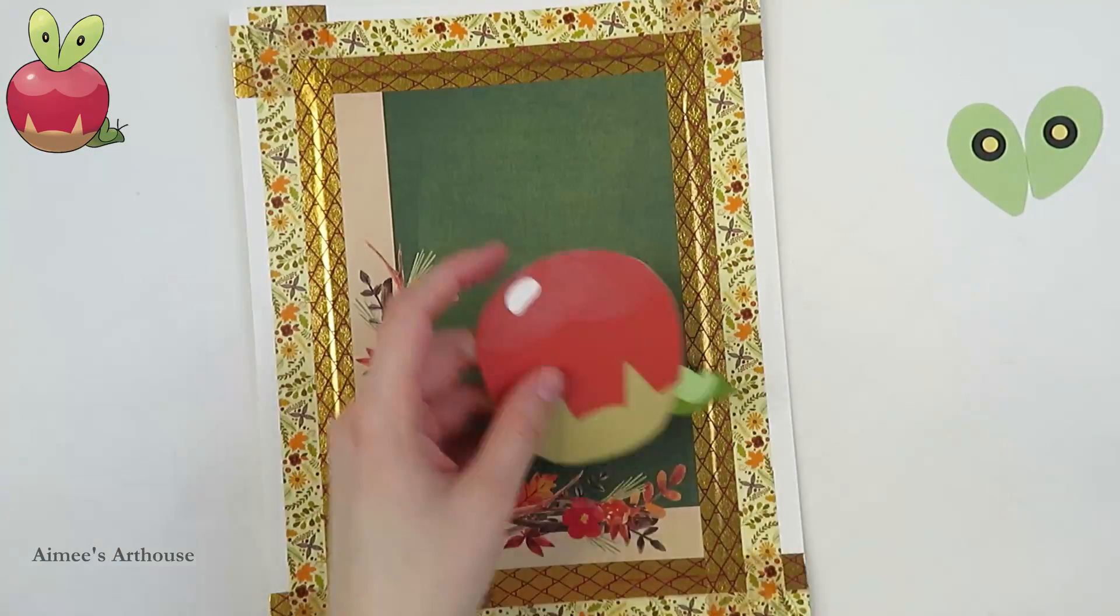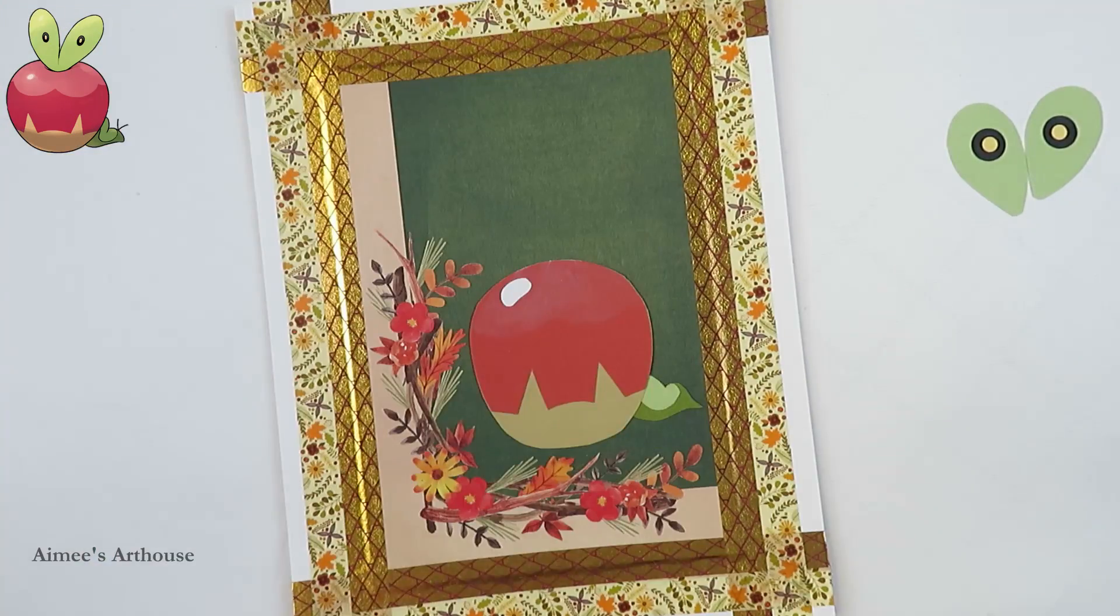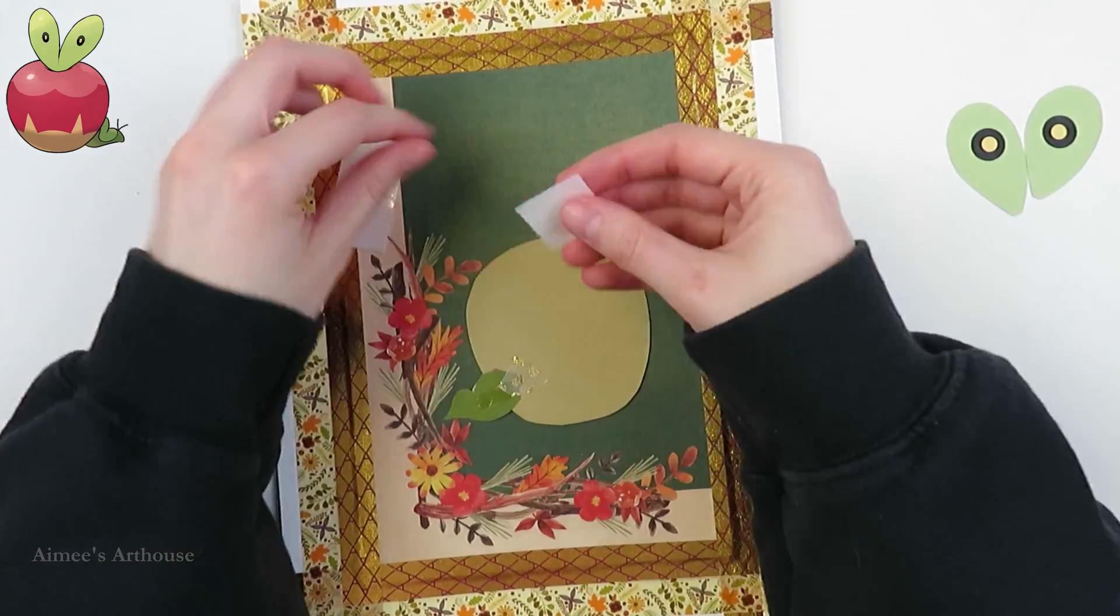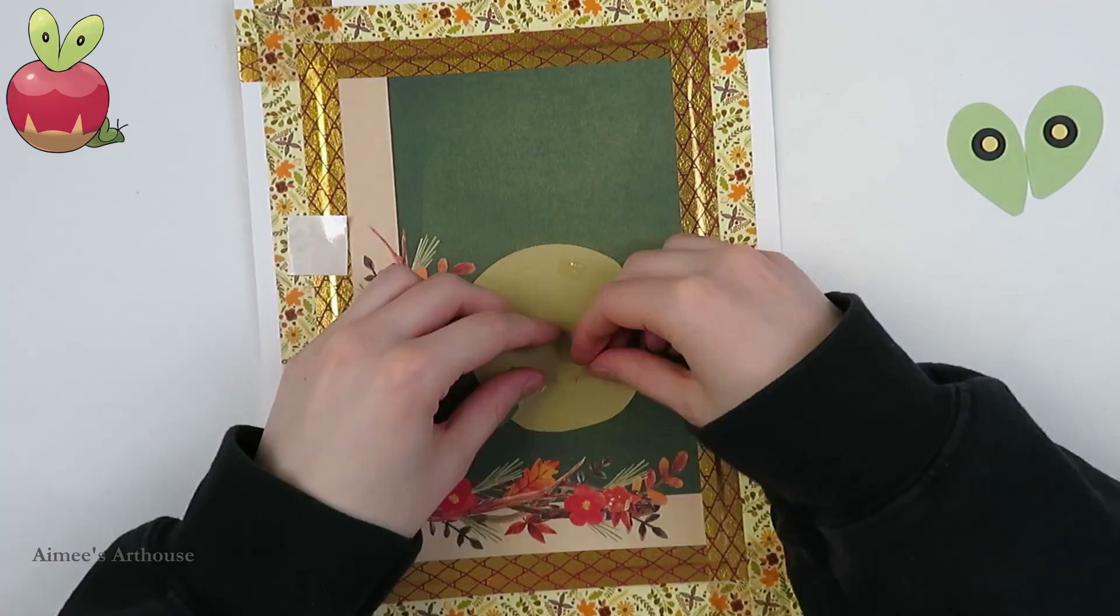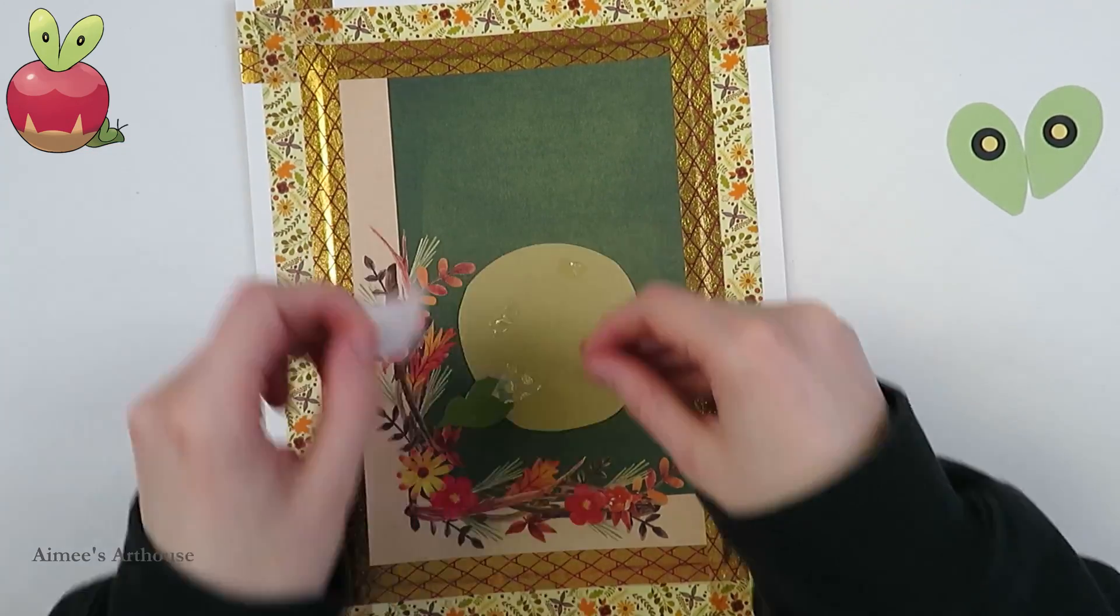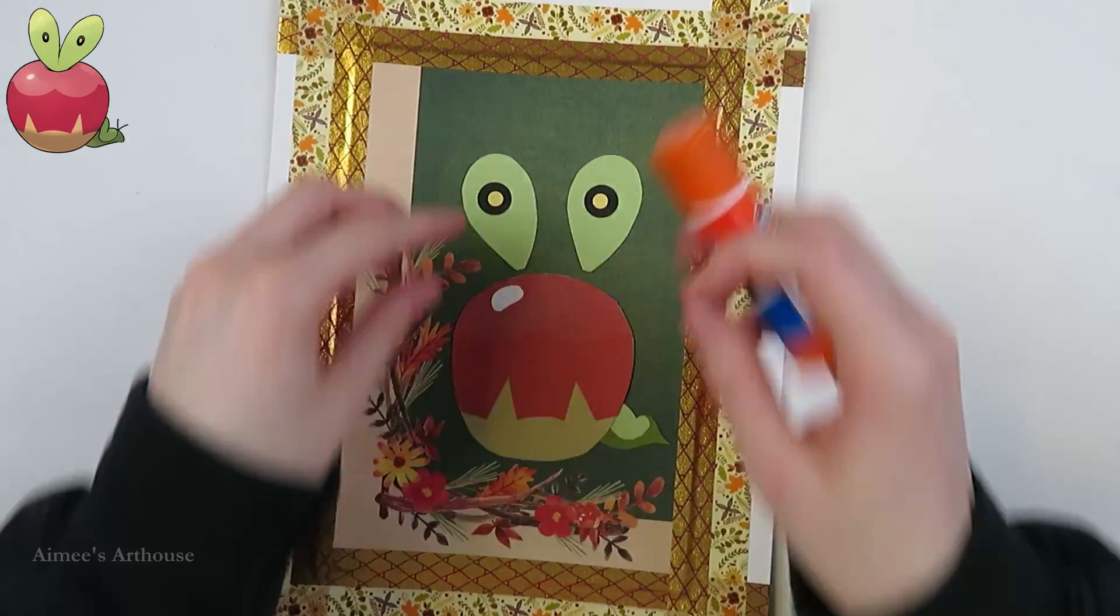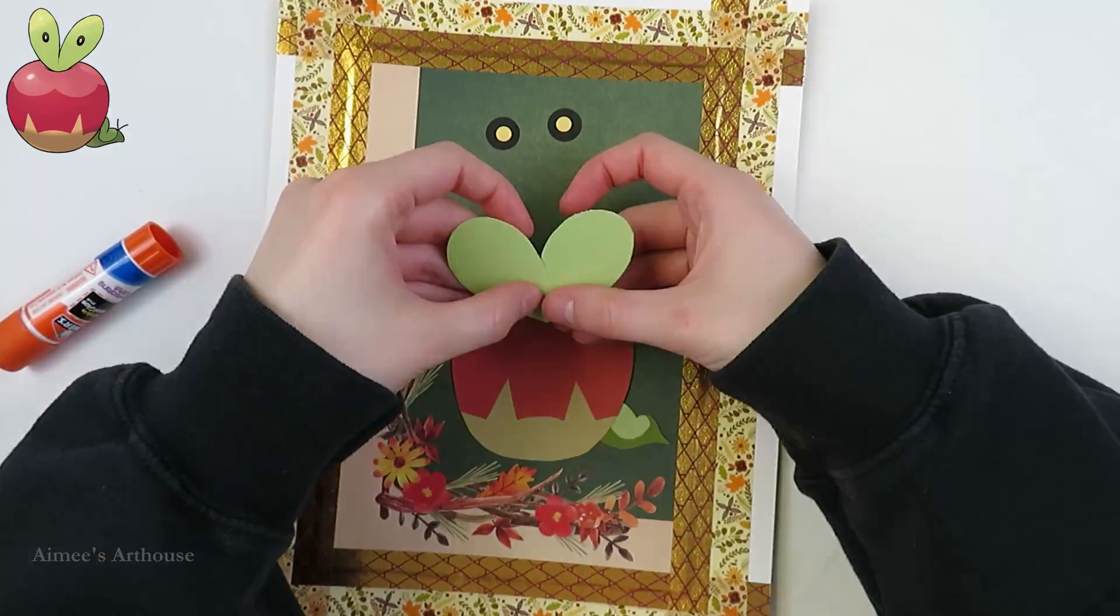Now that my frame is put together all that's left to do is to glue Applin down and I'm using some small strips of adhesive to do that. Sometimes when I'm lazy and I don't want to use an actual glue stick this is what I do. And finally have to assemble the eyes as well.